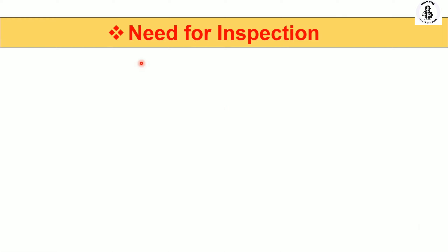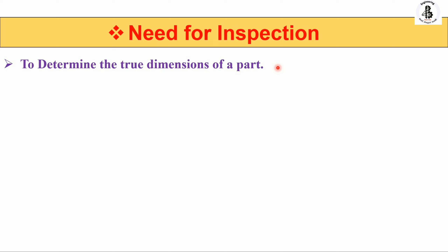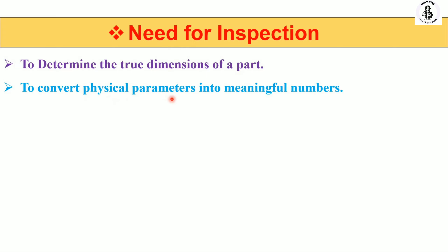Now for some important points on the need for inspections. Nowadays all industries are in mass production, so you need to measure everything during production from raw material to finished product. The first need of inspection is to determine the true dimensions of a part — whether the selected dimensions are as per requirement. The second point is to convert physical parameters into meaningful numbers so that you can easily decide the acceptance or rejection of components by measuring dimensional accuracy.